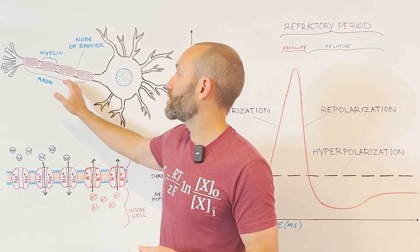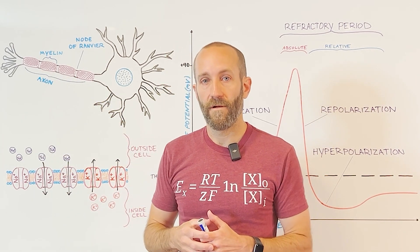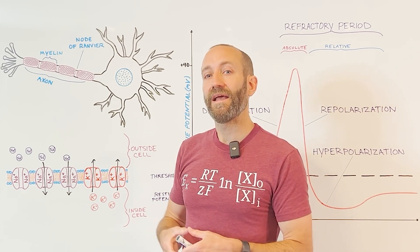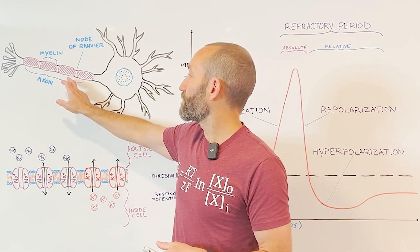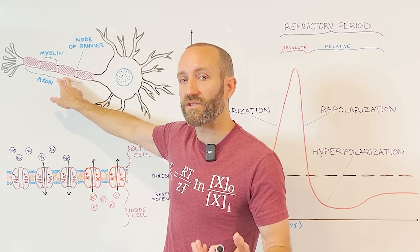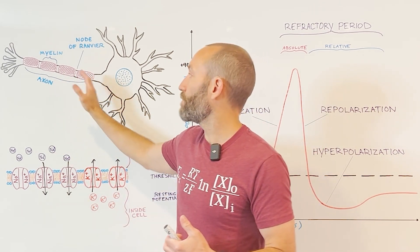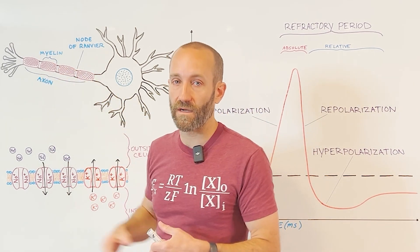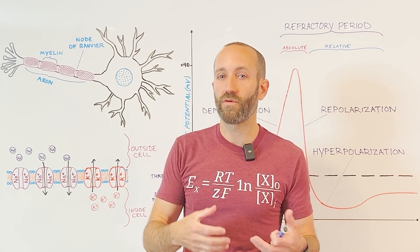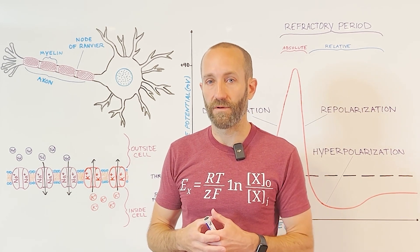This causes an action potential to be regenerated at each node of Ranvier, propelling the action potential down the axon. This regeneration at the nodes of Ranvier and slowing at the myelinated regions between them — which are called internodes — causes the action potential to appear as if it's jumping down the axon. We call this process saltatory conduction, from the Latin saltere, which means to jump.